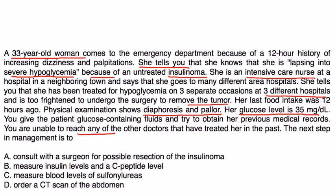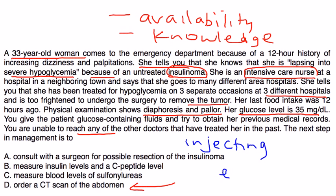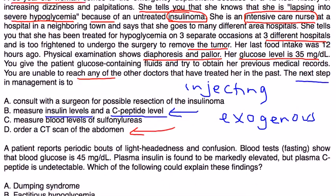The next step: if you took her word for it and assumed an insulinoma, you'd probably do a CT scan. However, the concern here is that she's a healthcare worker, and healthcare workers — a small percentage of them — sometimes have access to drugs and knowledge to fake symptoms. What's probably happening is she's injecting herself with insulin. That's an exogenous source of insulin, so her insulin levels will be very high but her C-peptide level will most likely be low. Measuring C-peptide is probably the next step.